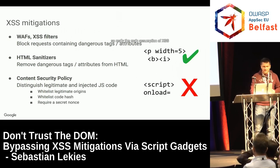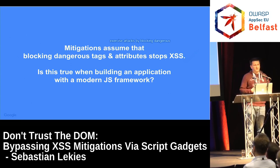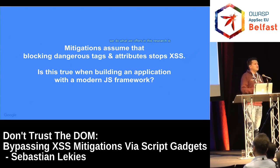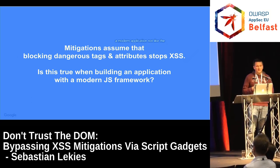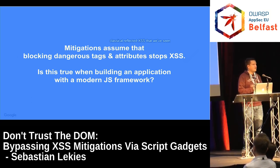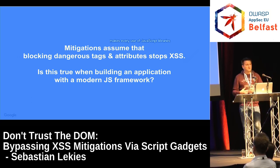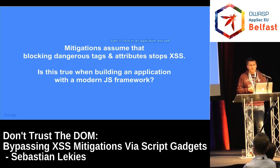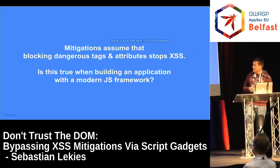The main assumption of XSS mitigations is that you can stop XSS attacks by blocking dangerous tags and dangerous attributes. What we ask in this research is: is this main assumption really true when building a modern application? Not the classical reflected XSS from ten years ago, but a modern application that makes heavy use of JavaScript libraries. The short answer is no — this assumption is not true, and that's what we are going to show you in the next 35 to 40 minutes.